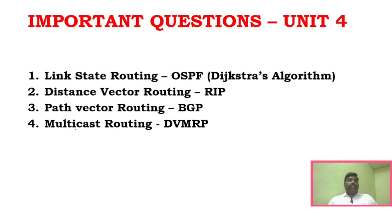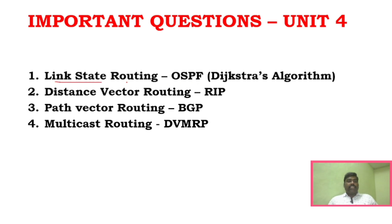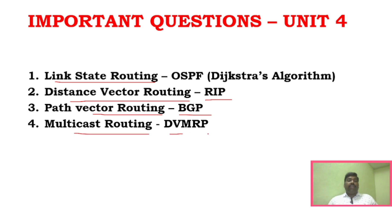For Unit 4, Part C questions will focus on routing algorithms. The four important algorithms are: link state routing, distance vector routing, OSPF or Dijkstra's algorithm, and distance vector routing or BGP. Multicast routing DVMRP is also important. I will share the relevant links in the description.